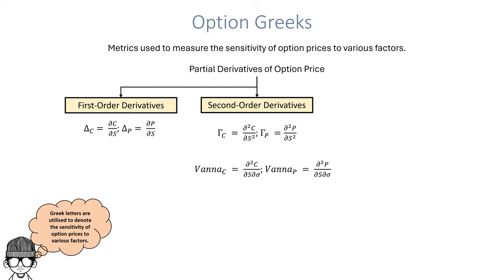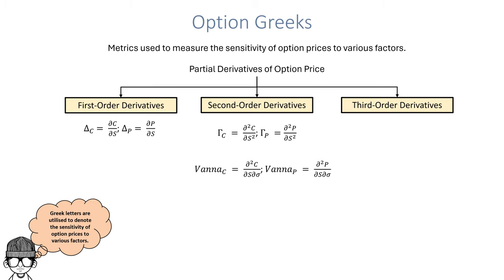We also have the example of Vanna, where Vanna is the derivative of the option price with respect to the change in the underlying price and change in volatility. It can also be looked at as the sensitivity of delta with respect to changes in volatility. We also have third-order derivatives, where we have the Greek called speed. Speed is the triple derivative of the option price with respect to the underlying price. It is also interpreted as the double derivative of delta with respect to the underlying price, or the sensitivity of gamma with respect to changes in the underlying price.